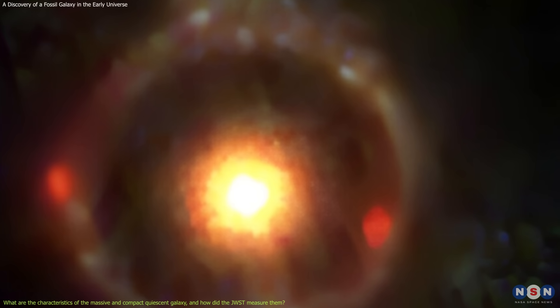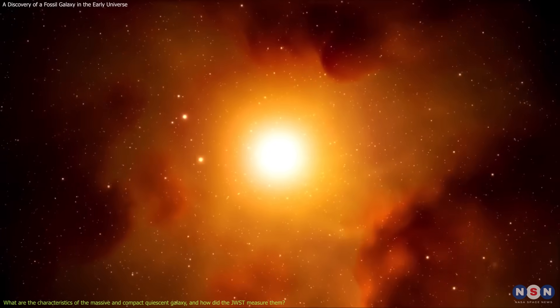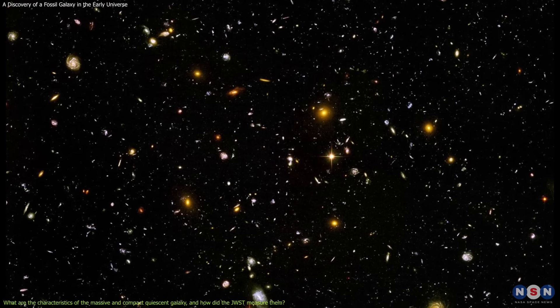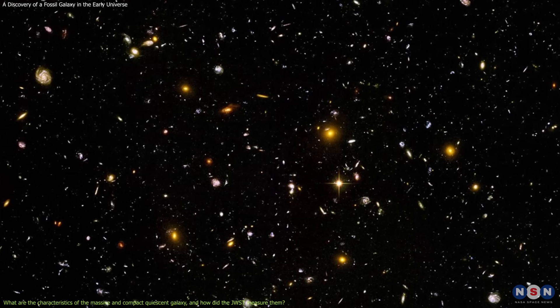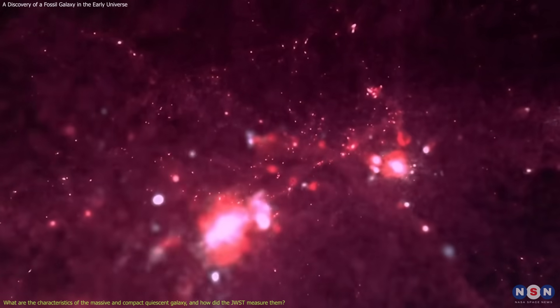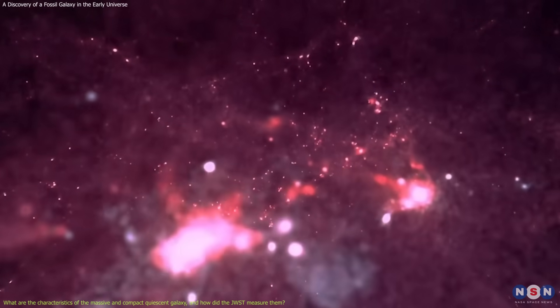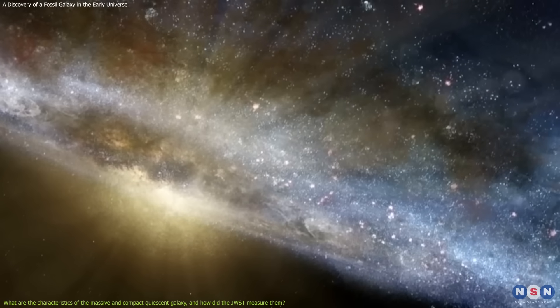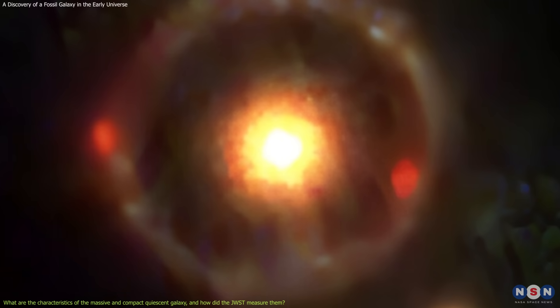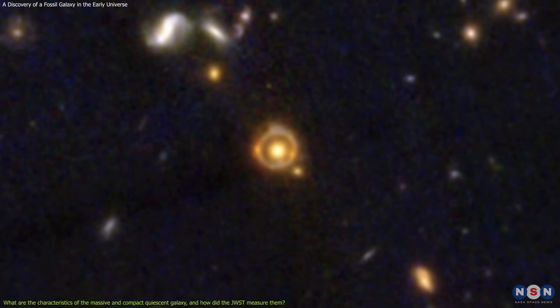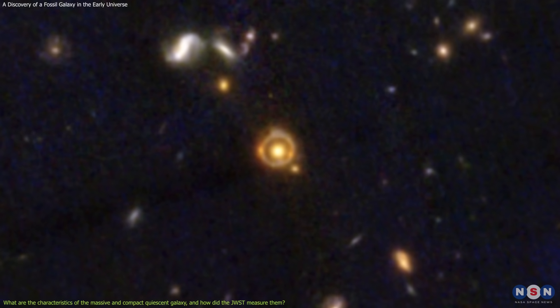What is so strange about this galaxy is that it has a very old age, as it stopped forming stars when the universe was only about 1.5 billion years old, which is about 10% of its current age. This means that this galaxy formed most of its stars in a very short and intense burst of star formation, and then quenched its star formation activity for unknown reasons. This galaxy is also very isolated, as it does not have any nearby companions or signs of interactions with other galaxies.